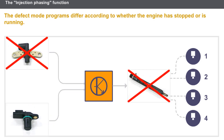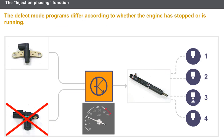There is no defect mode for the engine flywheel sensor. In the event of a fault on the cylinder reference sensor when the engine is running, the engine continues to operate. In the event of a fault on the cylinder reference sensor when the engine is stopped, there are two possible default programming modes: the engine starts, or the engine does not start.